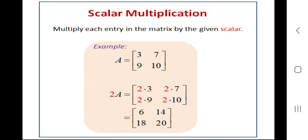First we see scalar multiplication. In scalar multiplication we multiply any number with a matrix. For example, matrix A has elements 3, 7, 9, and 10. We will multiply 2 with A, meaning we multiply 2 with each element of every row and column: 2 multiplied by 3, 2 multiplied by 7.